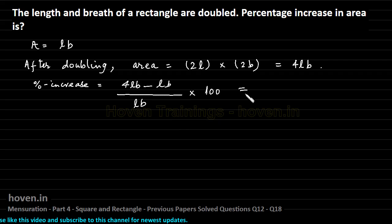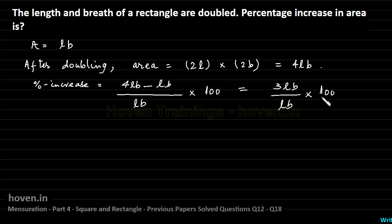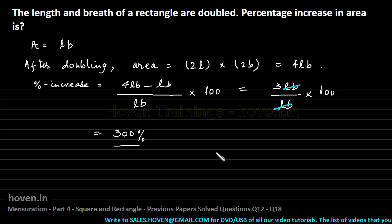We can see that this is equal to 4LB minus LB will be 3LB. So it is 3LB by LB multiplied by 100. Here we can see that this LB can be cancelled by this LB, and then we can multiply 3 by 100. Our answer would be equal to 300 percent. So this is the answer in this case.